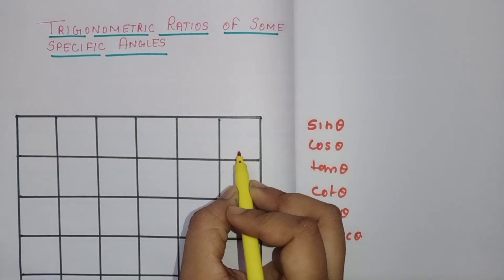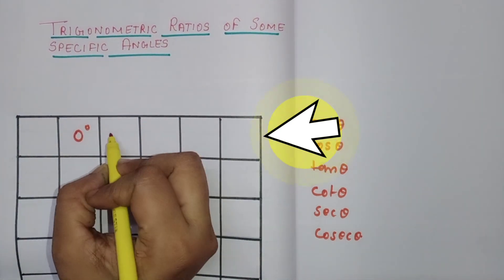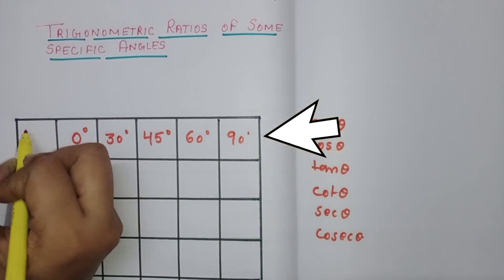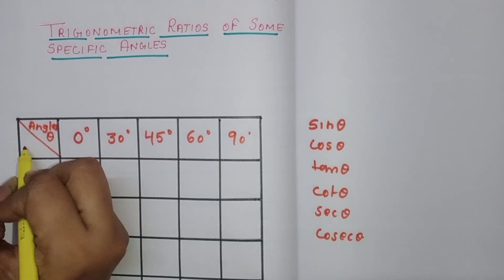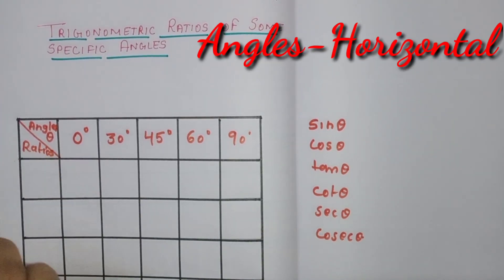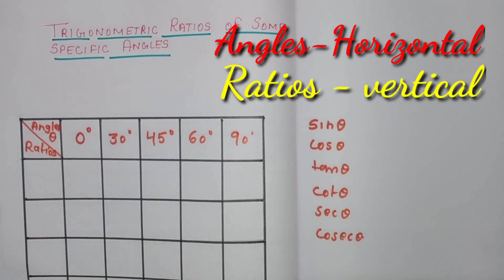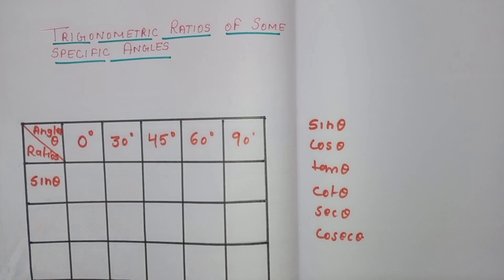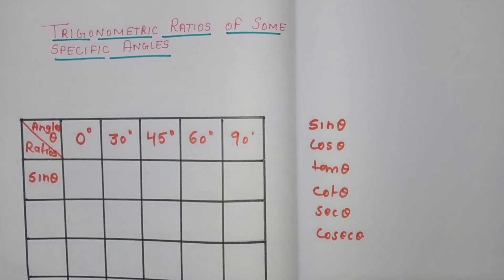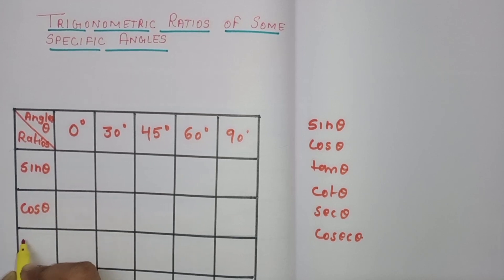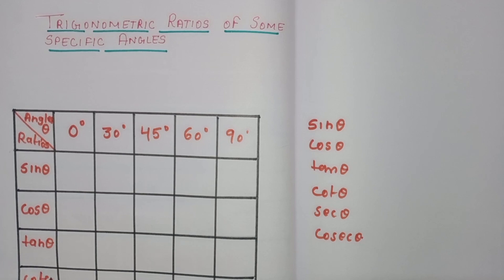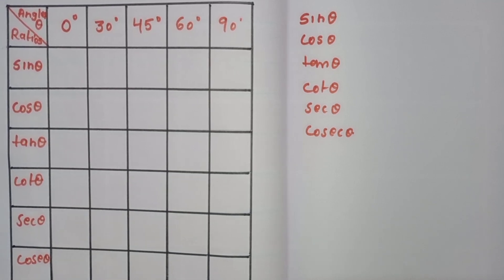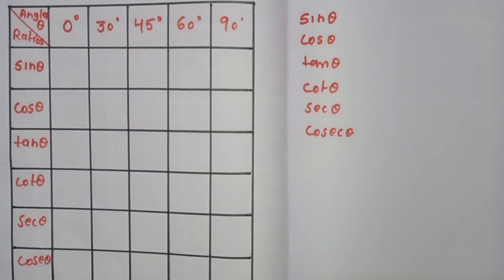This is the table. The angles go horizontal and the ratios are vertical. The angle theta takes values 0°, 30°, 45°, 60°, and 90°. The trigonometric ratios listed are: sin theta, cos theta, tan theta, cot theta, sec theta, and cosec theta. There are 6 trigonometric ratios of some specific angles.